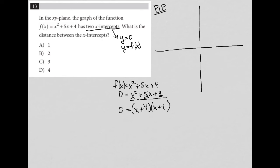Now that I have this separated as the product of two binomials, I can separate those binomials and set each equal to 0 individually. So I have x = -4 and x = -1, by subtracting 4 from both sides and subtracting 1 from both sides.